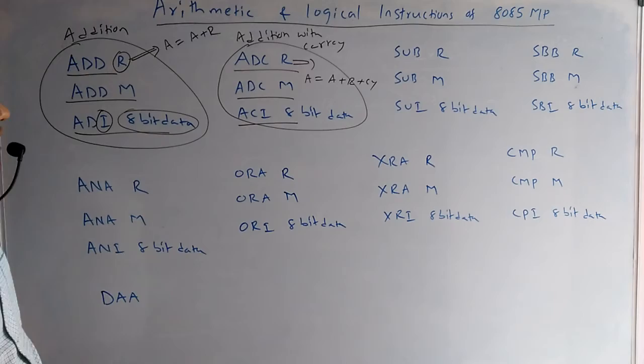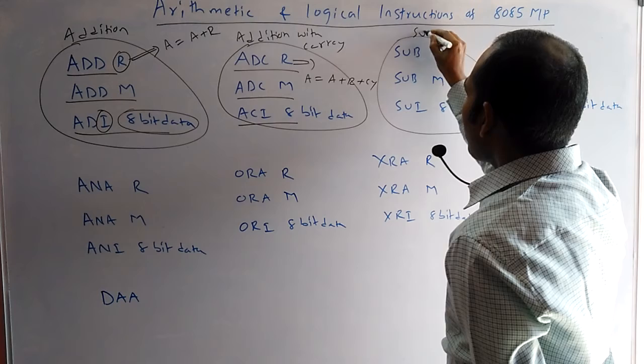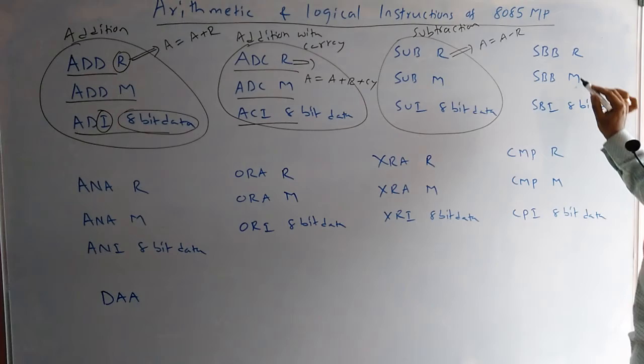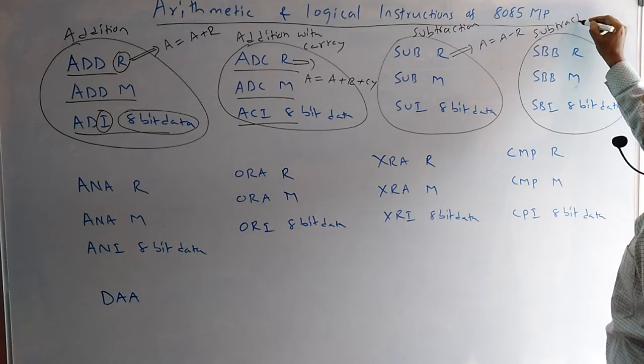Here is subtraction — normal subtraction. One value is always in the accumulator, the second one is in the instruction, and it performs A equals A minus R. And these are subtraction with borrow instructions.